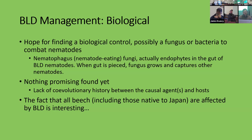On biological control: I was at a meeting in New Hampshire a couple of weeks ago and they showed amazing slides of a nematophagous (nematode-eating) fungus that persists in the gut of these nematodes. When you pierce the gut of a nematode, this fungus comes out, spreads everywhere, creates a crazy net that traps other nematodes, and then feeds on them — very interesting. Other than that, nothing very promising, but that's not to say something couldn't be found. Here in North America we don't have that co-evolutionary history between the causal agent and the host, and therefore we don't have biological control — but we'll see.